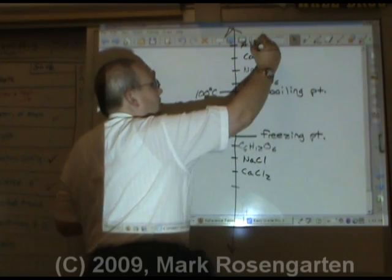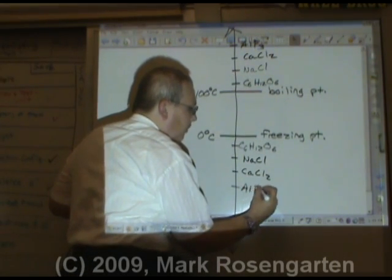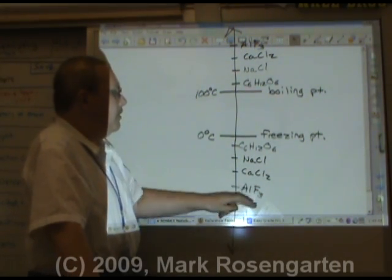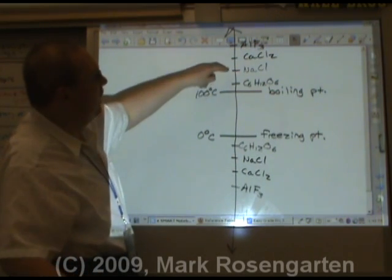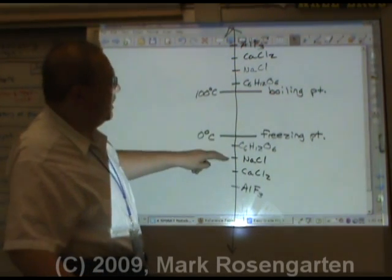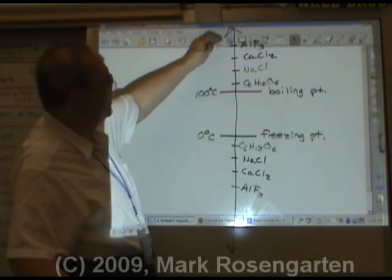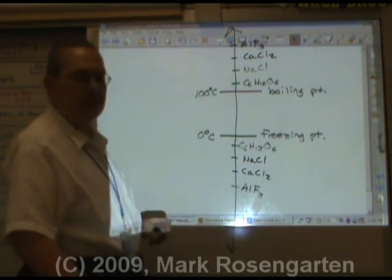Aluminum fluoride ionizes to form four ions, one aluminum, three fluorides. So the more ions that there are in the compound, the greater impact it's going to have on the boiling point and the freezing point.